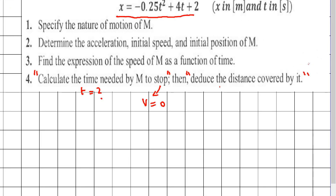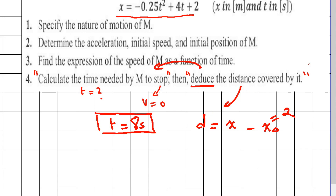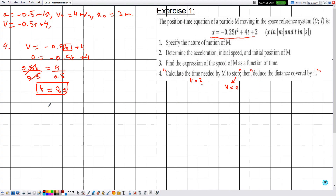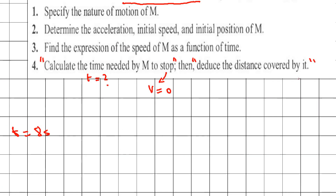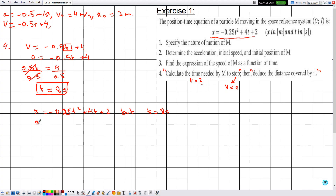For part two: deduce the distance covered by M. Note that the distance d = x - x₀, not just x. We know x₀ = 2 m. To find x, we use the position-time equation at the stopping time t = 8 s: x = -0.25(8²) + 4(8) + 2.